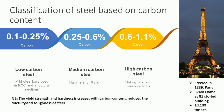Another classification of steel is based on carbon content, which varies from 0.1 to 1.1%. Low carbon or mild steel has 0.1 to 0.25% carbon; medium carbon steel has 0.25 to 0.6% and is commonly used in hammers or rails; high carbon steel has 0.6 to 1.1% and is used for drilling bits or masonry tools. However, increasing carbon beyond limits increases strength and hardness but reduces ductility and toughness, so carbon must be kept within the permissible range.